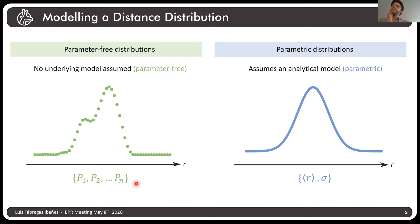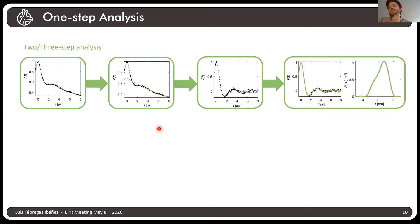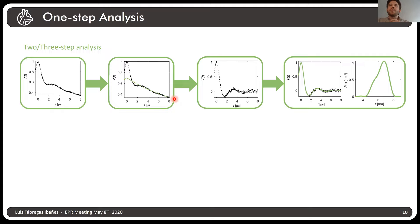So we have a general dipolar signal depending on a set of parameters, and we can have a parameter-free or parametric distribution. Now, how do we fit this? This brings me to the one-step analysis. In a classical two- or three-step DEER analysis workflow, you take a four-pulse DEER signal, fit the background to the tail of the signal, do background correction and modulation depth correction to get the dipolar evolution function, and then get your distance distribution. DearLab says: why do we need all these steps? If we have a full model for the signal, just fit all the parameters required to explain the time-domain signal — along with the distance distribution — all in one step.